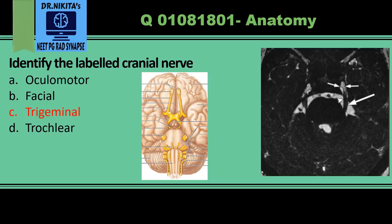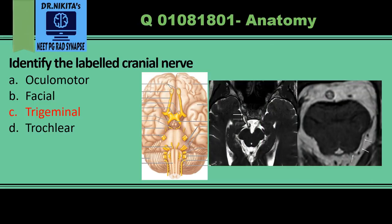Let's look at the other options. The oculomotor and trochlear nerves arise from the midbrain. The midbrain has a Mickey Mouse shape. We see this nerve arising from the ventral aspect of the midbrain — that is the oculomotor nerve. Here again, we see a very thin, slender nerve arising from the dorsal aspect of the midbrain — the thinnest nerve is the trochlear nerve.